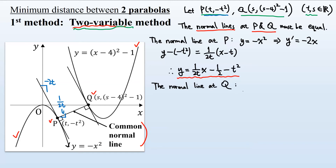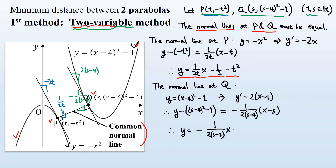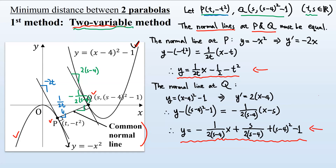For the normal line at Q: differentiating y equals (x minus 4) squared minus 1 gives 2(x minus 4), so the slope of the tangent at Q is 2(s minus 4), and the slope of the normal line is minus 1 over 2(s minus 4). The normal line at Q simplifies to: y equals minus (1 over 2(s minus 4))x plus s over (2(s minus 4)) plus (s minus 4) squared minus 1.